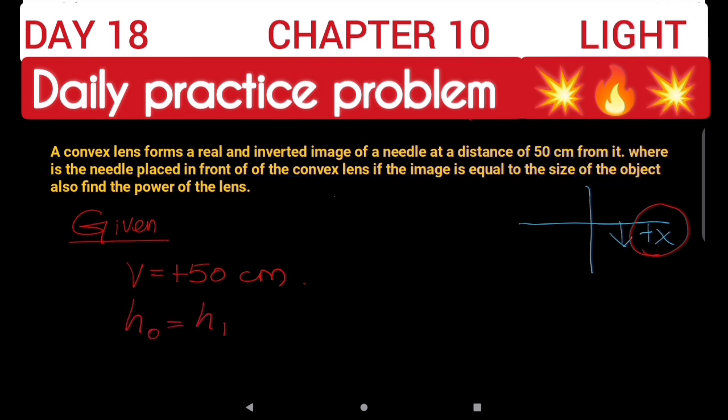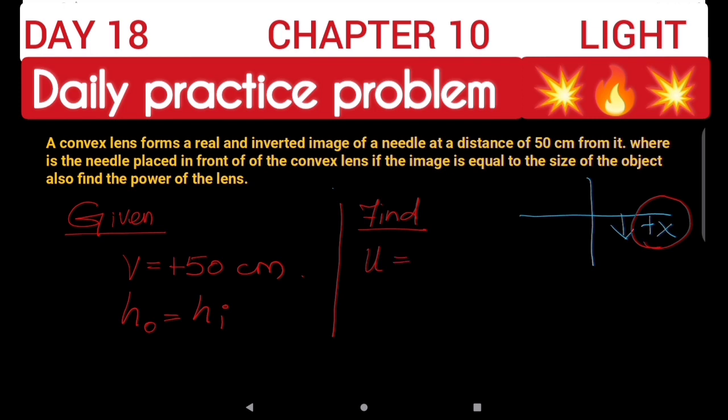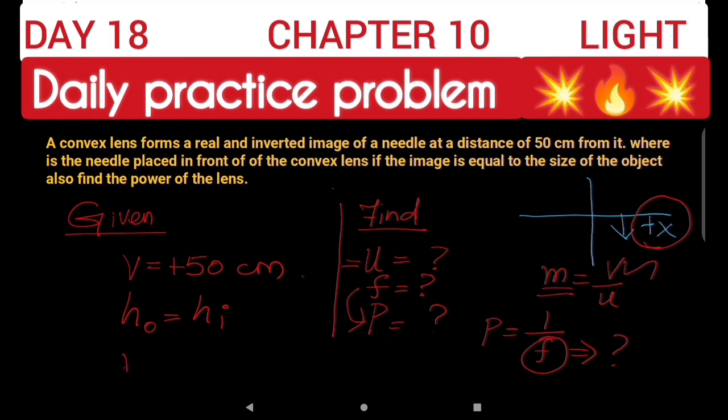So h0 is equal to hi. We need to find the object distance. We can use the magnification formula. M is equal to V by U. We know the V value. We also know the M value. Since the image is real and inverted, magnification is negative. For real and inverted images, we take negative sign because it's on the negative side of the y-axis. Since the image is the same size, M is equal to 1 in magnitude. So M equals minus 1.